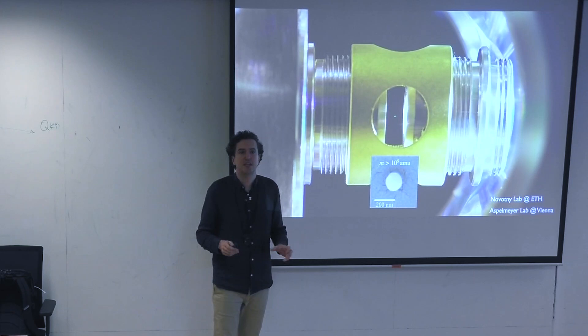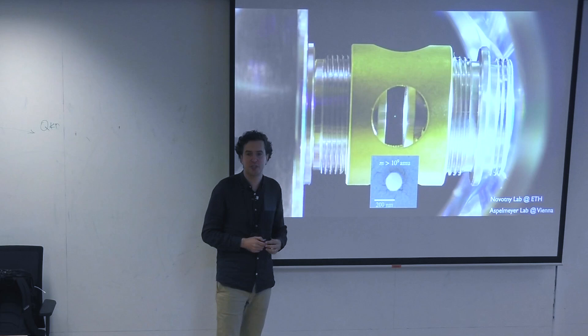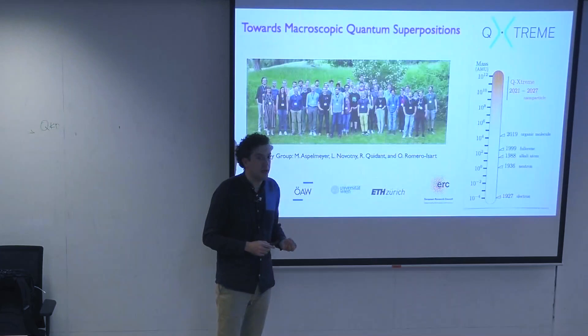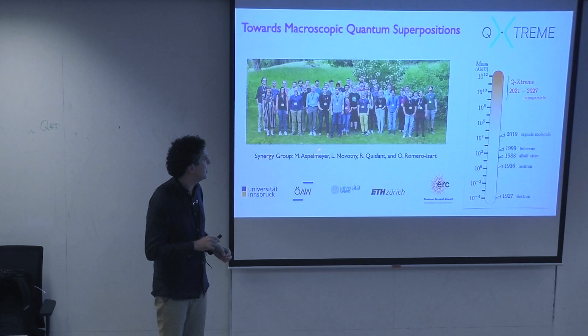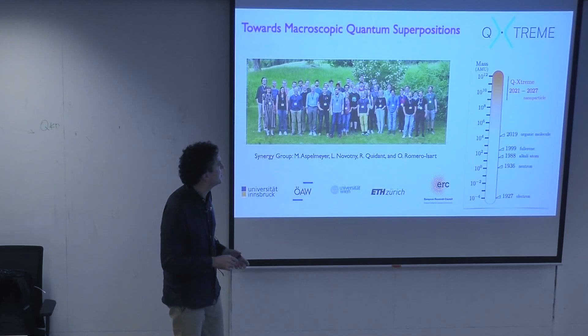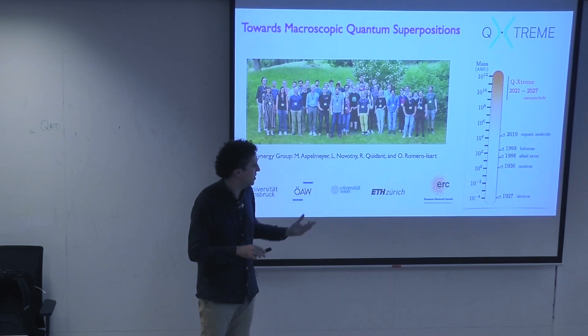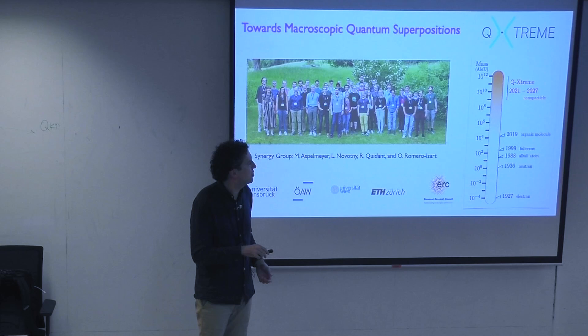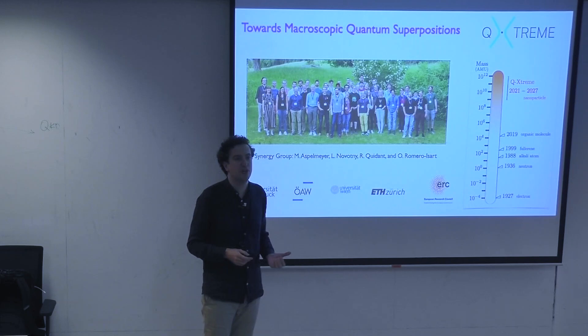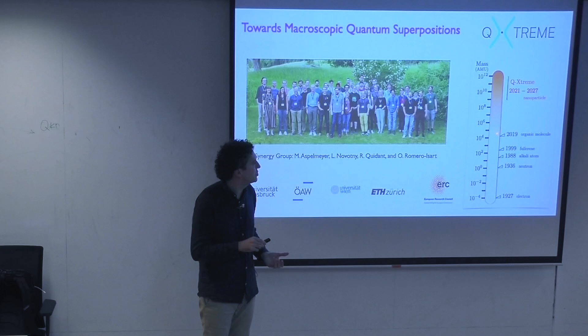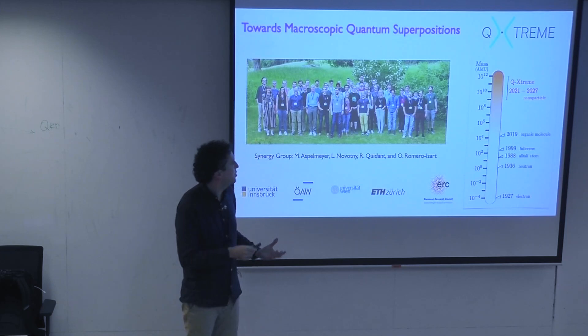My name is Uriel Romerozart. I am a theorist who has been working on these systems for many years, in close collaboration with experimental groups. The question of this talk is something we want to address experimentally in close collaboration with the groups of Marcus Aspelmeyer in Vienna, Lucas Novoni and Roman Kidan at ETH Zurich. We got a grant to try to prepare a massive object into a microscopic superposition. Looking at the mass scale from all experiments done historically — from electrons, neutrons, alkali atoms, to fullerene — the world record is now the amazing experiments in the group of Marcus Arndt, showing matter wave interference with organic molecules of mass around 10 to the 4 atomic mass units. Now we want to make this jump to do the same with nanoparticles of mass scale around 10 to the 9 to 10 to the 12. This is a project funded by the European Research Council.